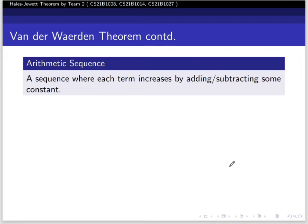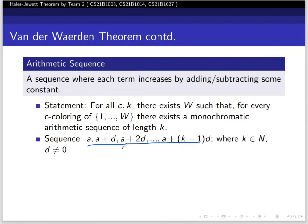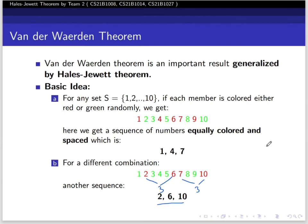An arithmetic sequence is a sequence where each term increases by adding or subtracting some constant, also known as arithmetic progression. The van der Waerden theorem states that for all c and k, there exists a w such that for every c-coloring of 1 to w, there exists a monochromatic arithmetic sequence of length k. The sequence is a, a+d, a+2d, to a+(k-1)d, where d is not equal to 0.